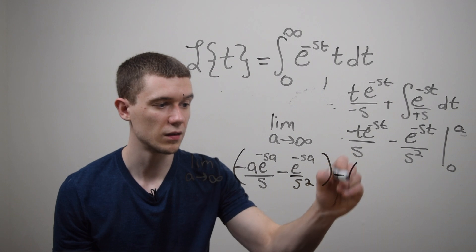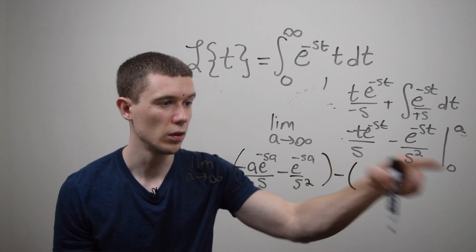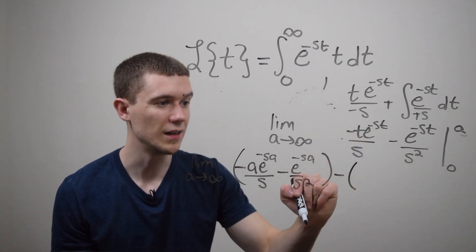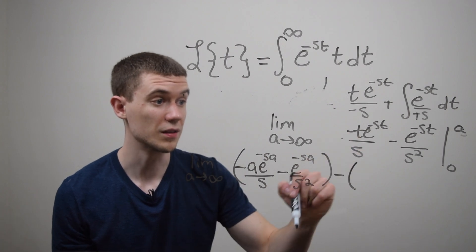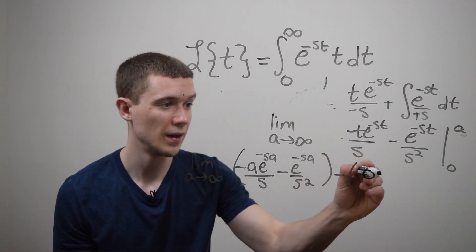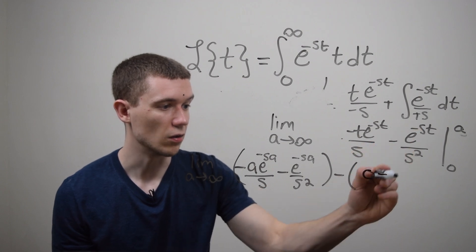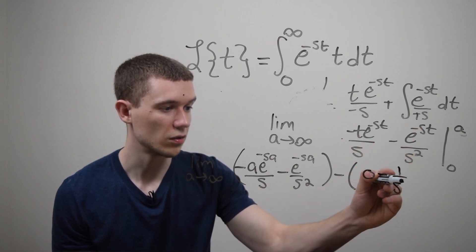and then minus plug in the lower limit. Well if I plug in zero here this will be zero times something which is just zero and then I'll get minus e to the zero is one over s squared.